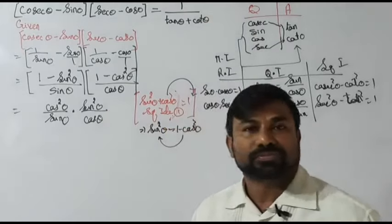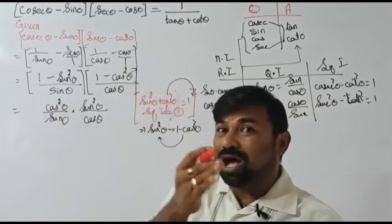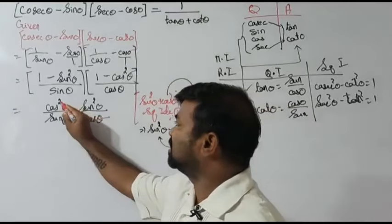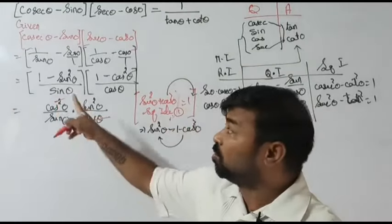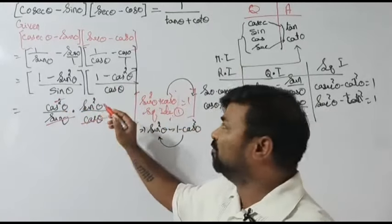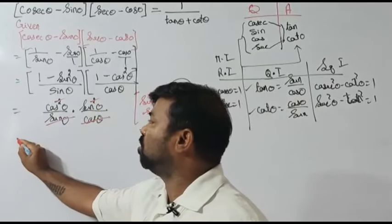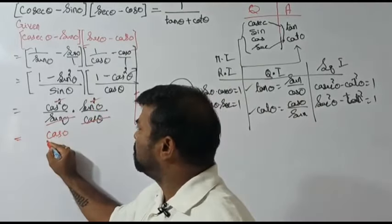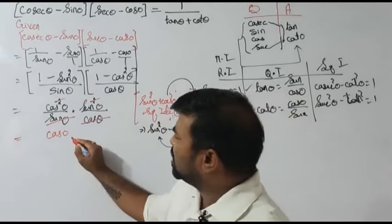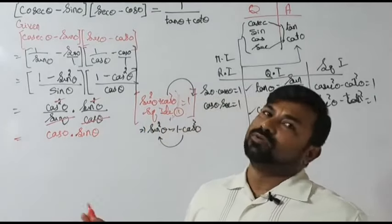So we now have cos²θ over sine θ, into sin²θ over cos θ. Now we can cancel: cos squared means cos times cos — one cos cancels — leaving one cos. Sine squared means sine times sine — one sine cancels — leaving one sine. So what is left over is cos θ into sine θ.